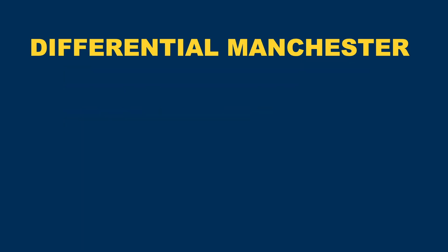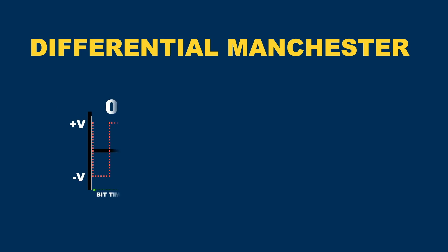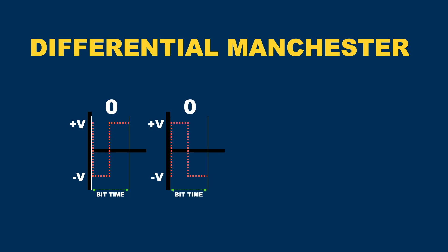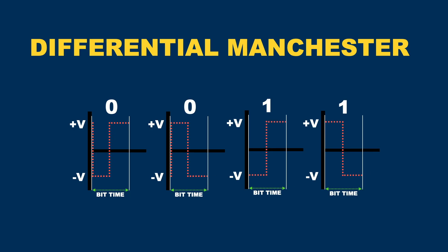Just like in regular Manchester encoding, in Differential Manchester there is also a transition in the middle of the bit interval. But a binary 0 always has a transition at the beginning of the bit time, and a binary 1 will not have a transition at the beginning of the bit time.